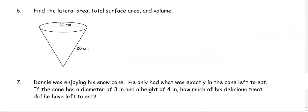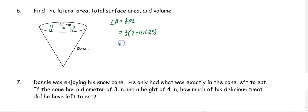In number six we want to find the lateral area, the total surface area, and the volume. Your lateral area is equal to one half perimeter times the slant height. The diameter is 30, so we bisect it in half to get a radius of 15. We have one half times two pi times 15 times the slant height of 25.